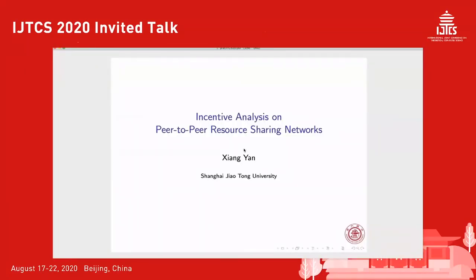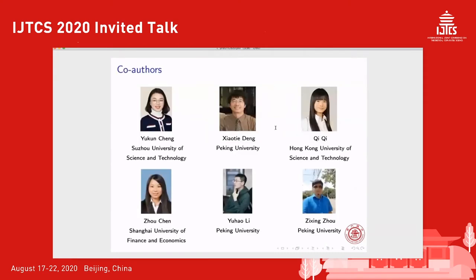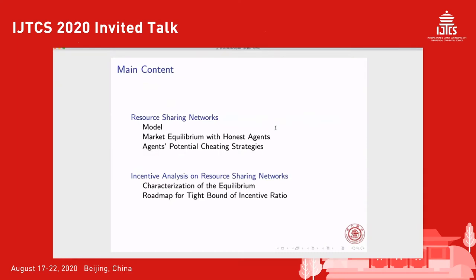Hello everyone. This is Xiang Yan from Shanghai JiaoTong University. Today I'm going to talk about incentive analysis on peer-to-peer resource sharing networks. This talk will include joint work with Professor Cheng, Deng, Qi, and their students. I will first introduce our model for the resource sharing network, the market equilibrium solution when all participants are honest, and what an agent's potential cheating strategy is in such a resource sharing scenario, and how this cheating strategy will influence the resource sharing results.